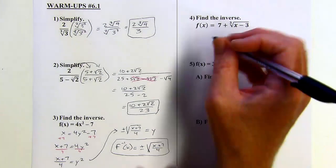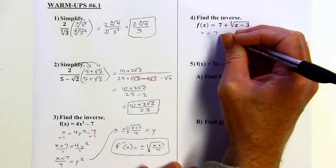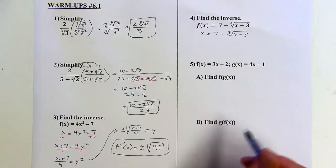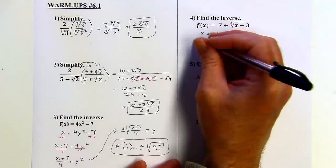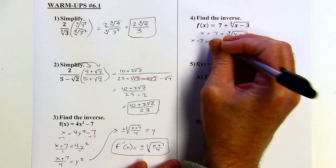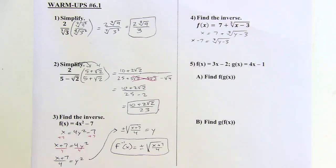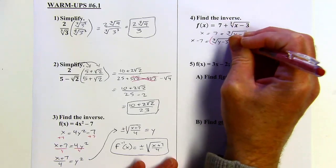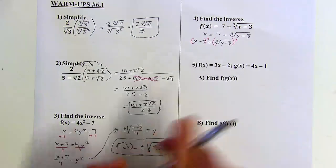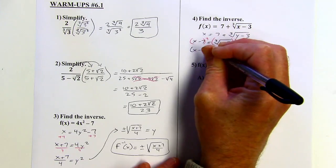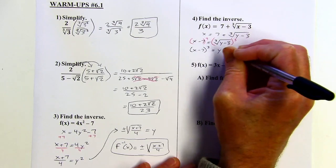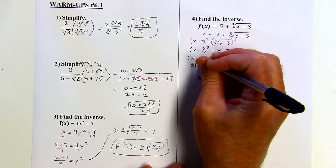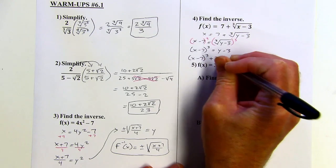All right. Next problem. Same kind of deal. We're going to switch the x and the y. It's just we're dealing with a cube root here, but the principle is the same. So I switch the x and the y, and then I'm going to isolate the y. So I'll start by subtracting 7 from both sides. And now I want to get rid of the radical, so I'm going to cube both sides of the equation. So I've got x minus 7, the quantity x minus 7 cubed equals y minus 3, and then y is almost isolated. We just want to add 3 to both sides.